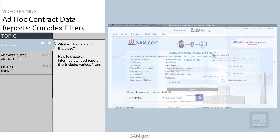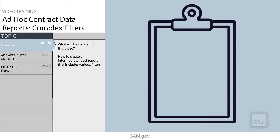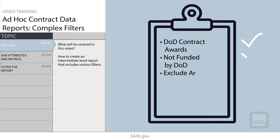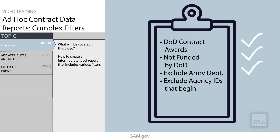Let's begin by looking at our report requirements. We want to see the contracts and their dollars obligated that were awarded by DOD but were not funded by DOD. We also want to exclude the Department of the Army and any agency ID starting with 97, which excludes agencies that are not part of the four main branches of the DOD. And we want all of this information for fiscal years 2019 and 2020.